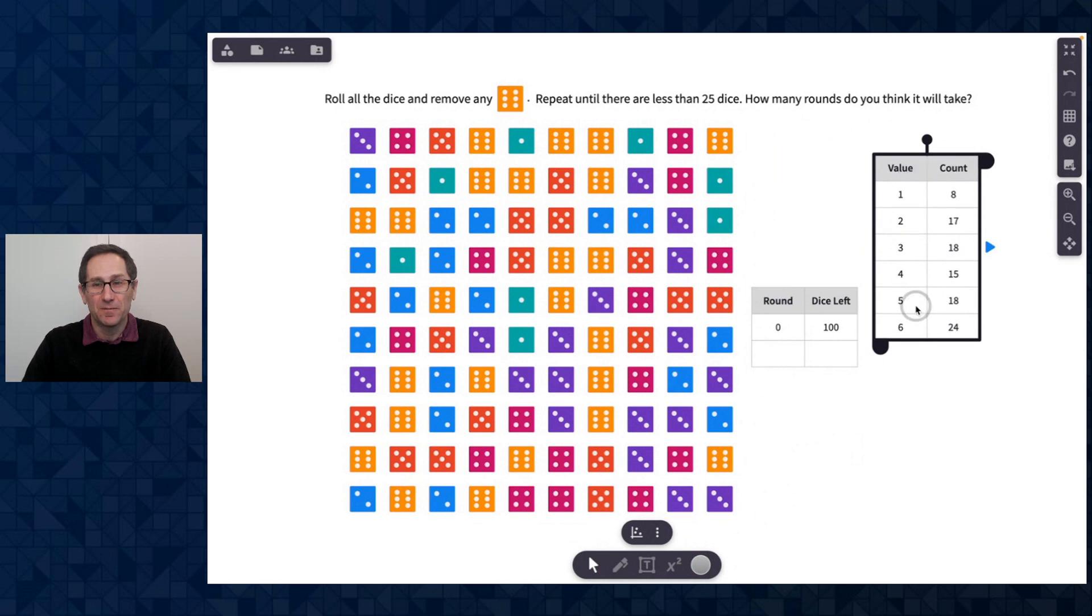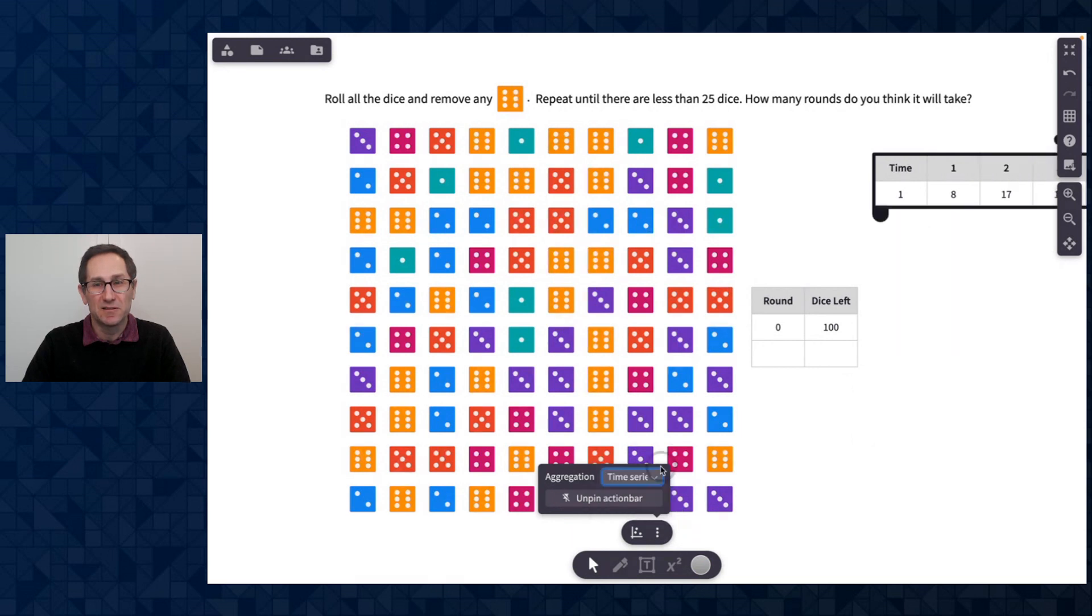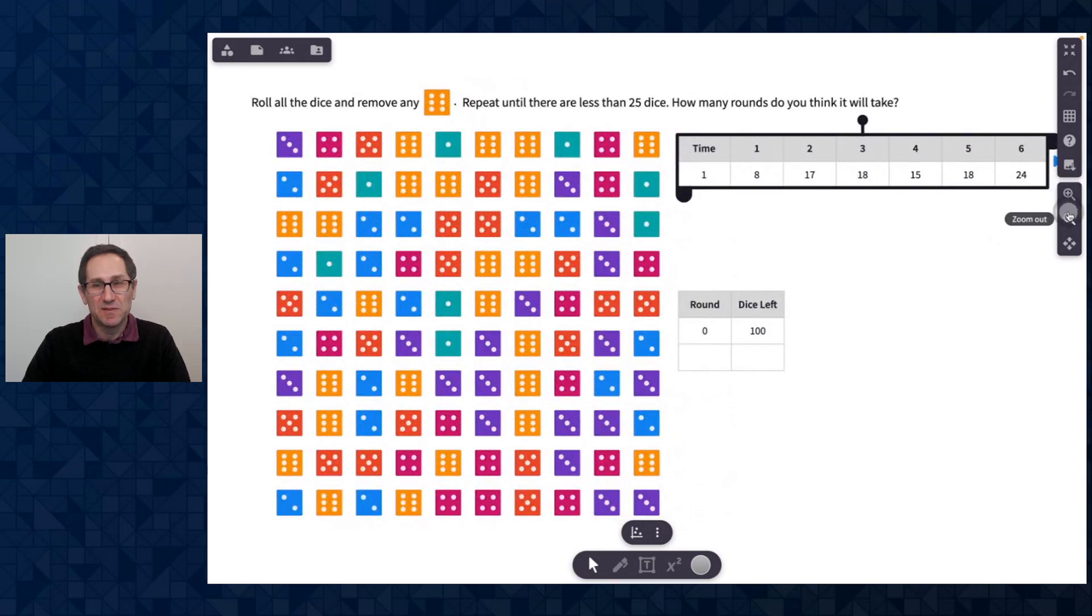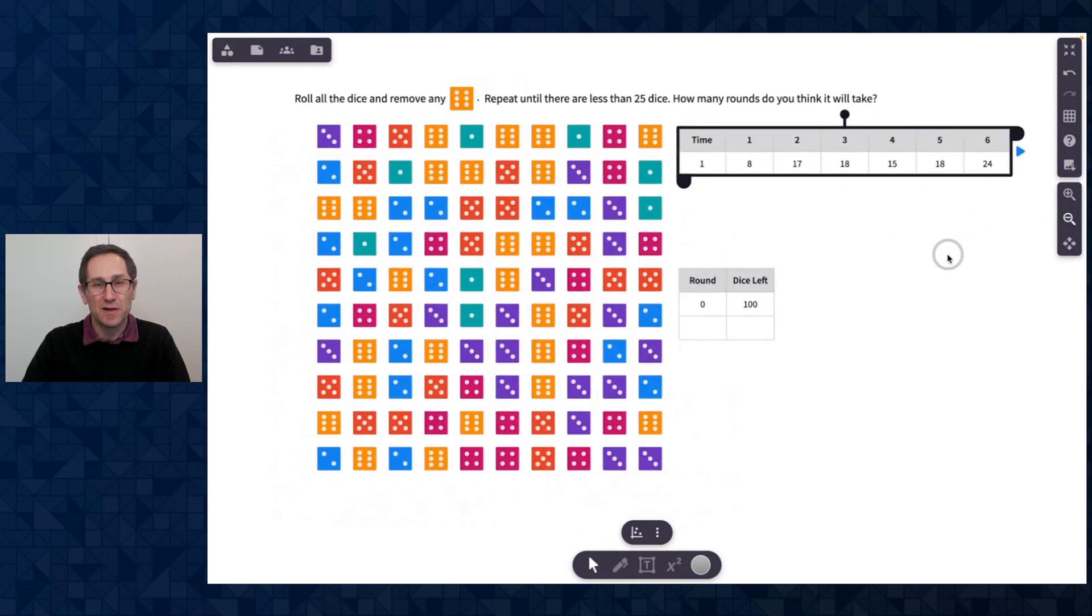And I get this table here that shows me I have 24 sixes. I'm going to go to the advanced menu at the bottom on the table and change the aggregation method from replace to time series. I see this first time I got 24 sixes. So now in round zero, before I started, there were 100 dice. After round one, I'm going to delete those 24 sixes and 100 minus 24 is 76.